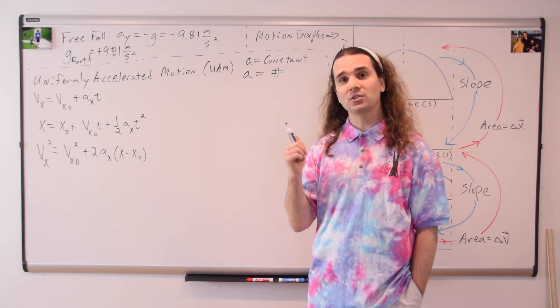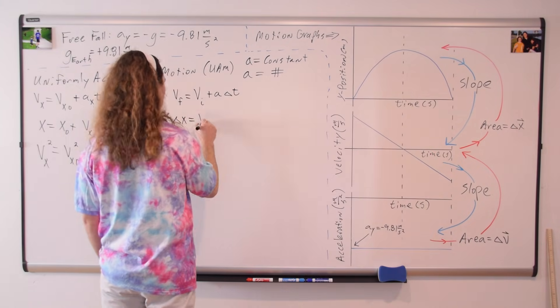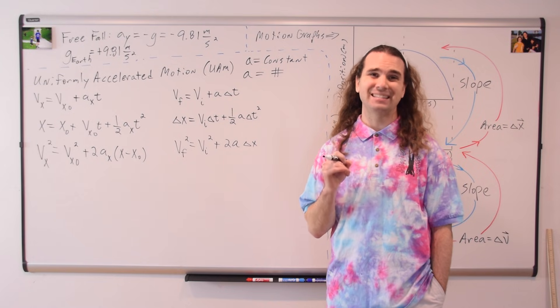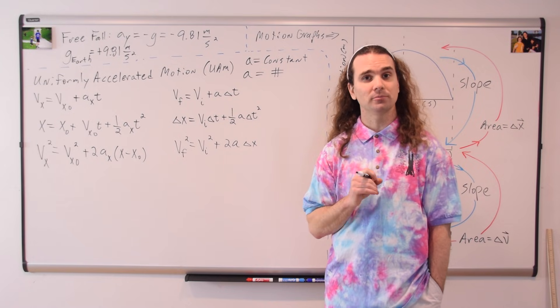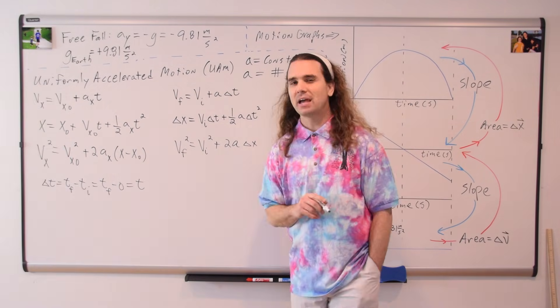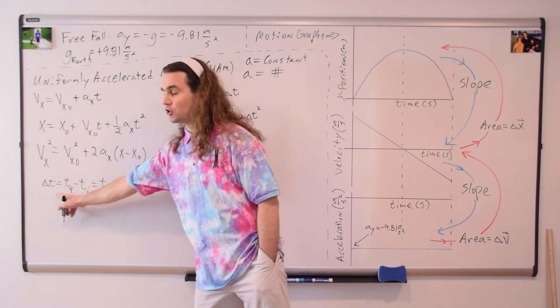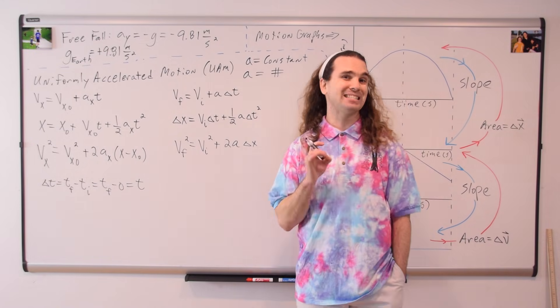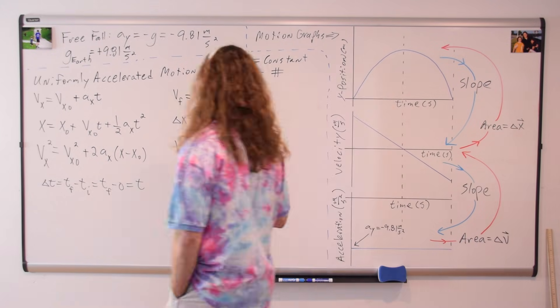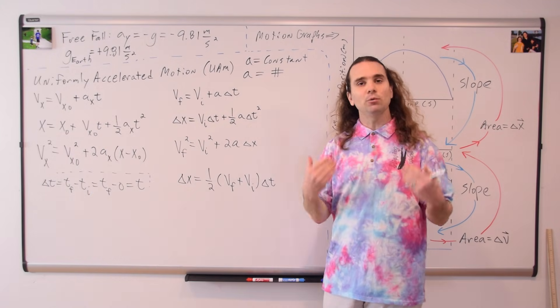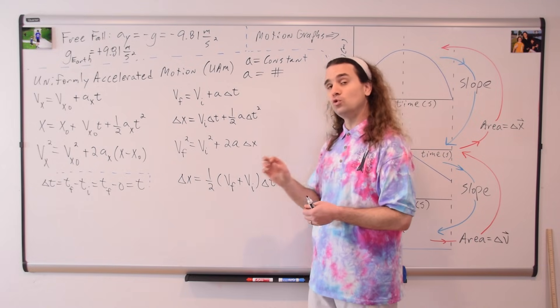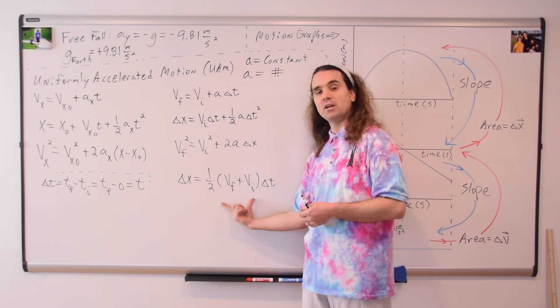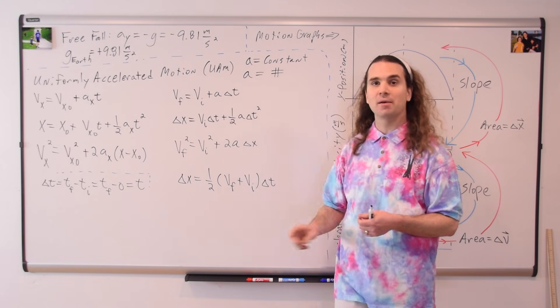So, I write them this way. Notice on the AP Equation sheet, it is assumed that time initial equals zero. Which is how they end up using time instead of change in time. Also, there is one uniformly accelerated motion equation that is not on the equation sheet. It would probably be helpful if you learned this uniformly accelerated motion equation, displacement equals one-half times the quantity velocity final plus velocity initial times the change in time.